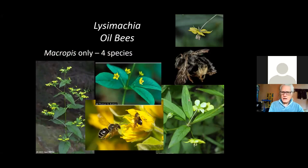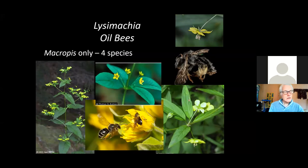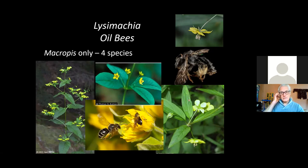The native Lysimachias — not the loosestrife such as purple loosestrife or garden loosestrife, which are invasive and non-native, but the natives — support bees because they produce oils rather than nectar. These oil bees, Macropis, only go to this plant because they've decided they need to have oil to feed their babies. There's a lot less loosestrife around than there used to be, and there are a lot fewer of these bees. So here's an example where plantings of loosestrife could be a positive.